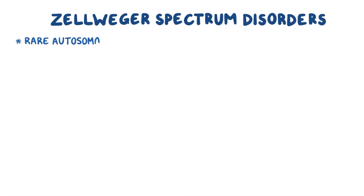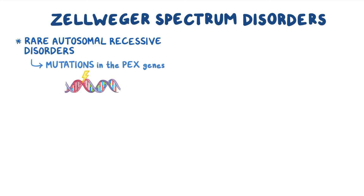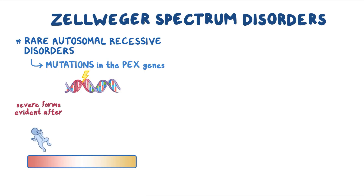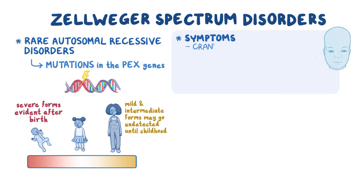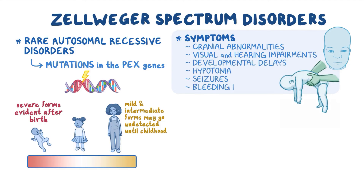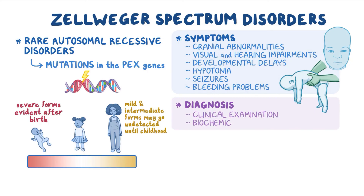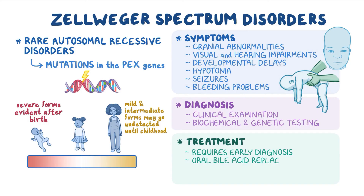As a quick recap, Zellweger spectrum disorders, or ZSDs, are rare autosomal recessive disorders caused by mutations in the PEX genes. Symptoms and disease progression vary greatly, where severe forms are evident at birth and mild and intermediate forms may go undetected until childhood. Symptoms often include cranial abnormalities, visual and hearing impairments, developmental delays, hypotonia, seizures, and bleeding problems. ZSD affects the functioning of peroxisomes, causing buildup of very long-chain fatty acids and degeneration of nerves, affecting multiple organ systems. Diagnosis involves a thorough clinical examination as well as biochemical and genetic testing. Effective treatment requires early diagnosis and involves oral bile acid replacement therapy with cholic acid, with other treatment being supportive and based on symptoms.